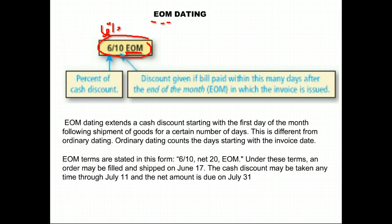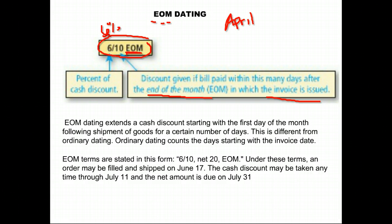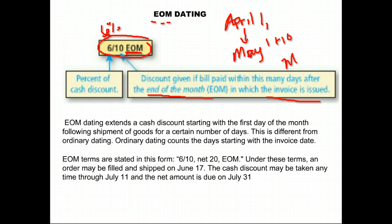You get a 6% cash discount if you pay within 10 days. But this is different — it's not 10 days from the invoice. It's 10 days from the end of the month for when the invoice was issued, which gives you more time to get a cash price. So when it's end of month, it gives you more time.